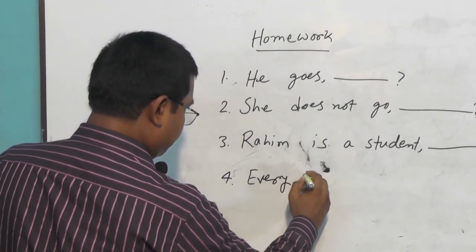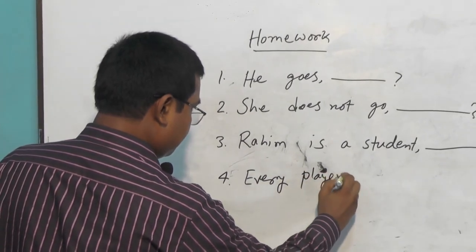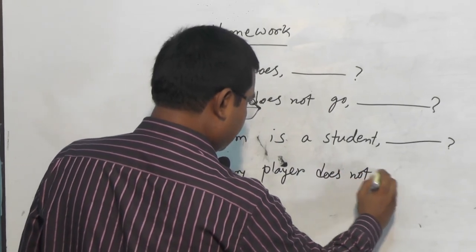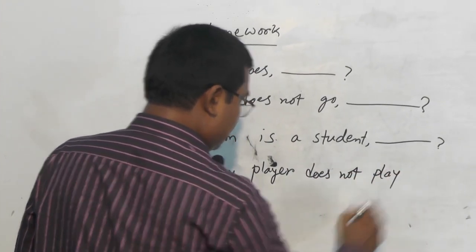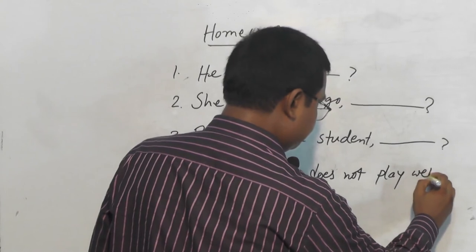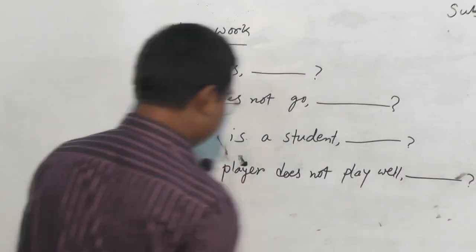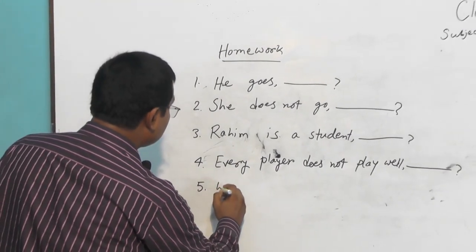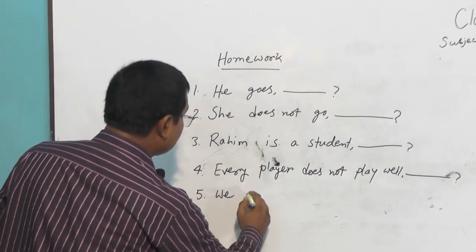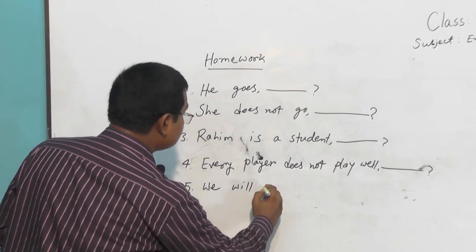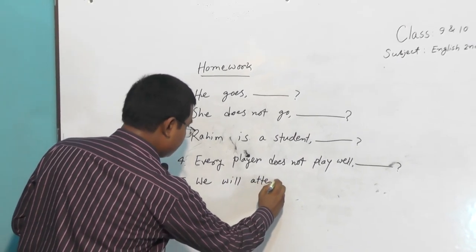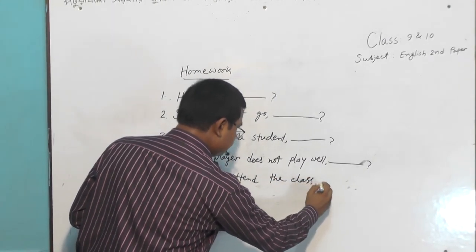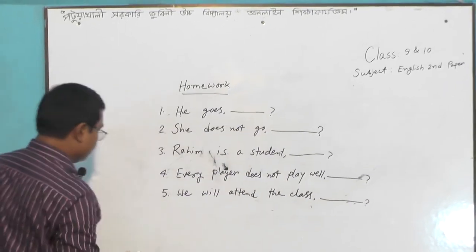Number four: 'Every player does not play well'. Number five: 'We will attend the class'.